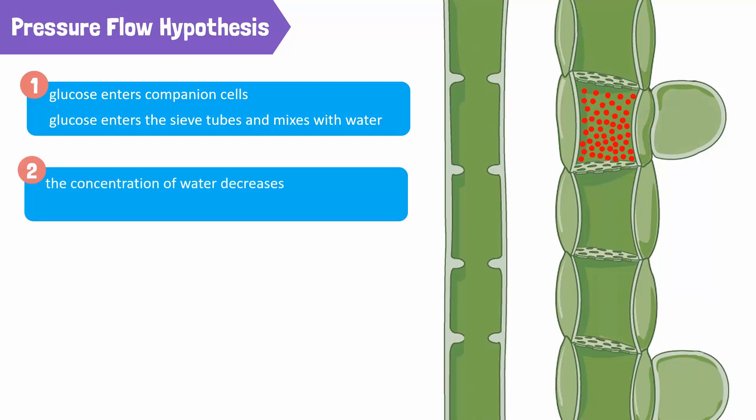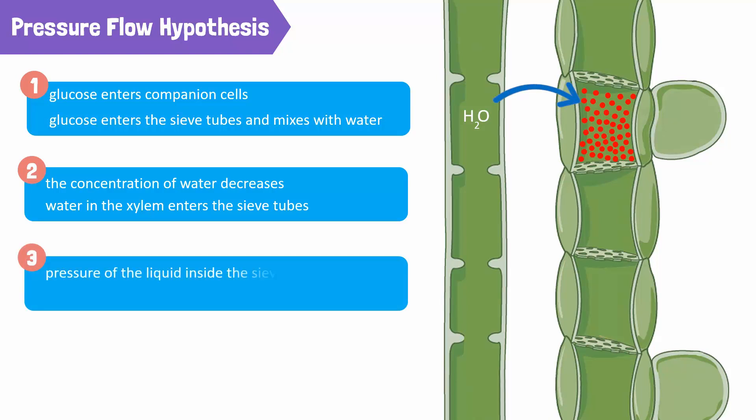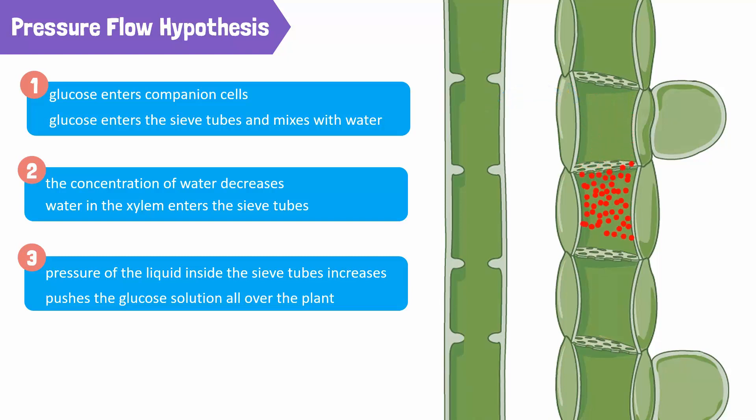The xylem tube next to it now has more water in it. This has an interesting effect. In fact, the water in the xylem enters the sieve tubes due to the difference in concentration. This raises the pressure of the liquid inside the sieve tubes and pushes the glucose solution all over the plant from storage areas to growing points like fruits.